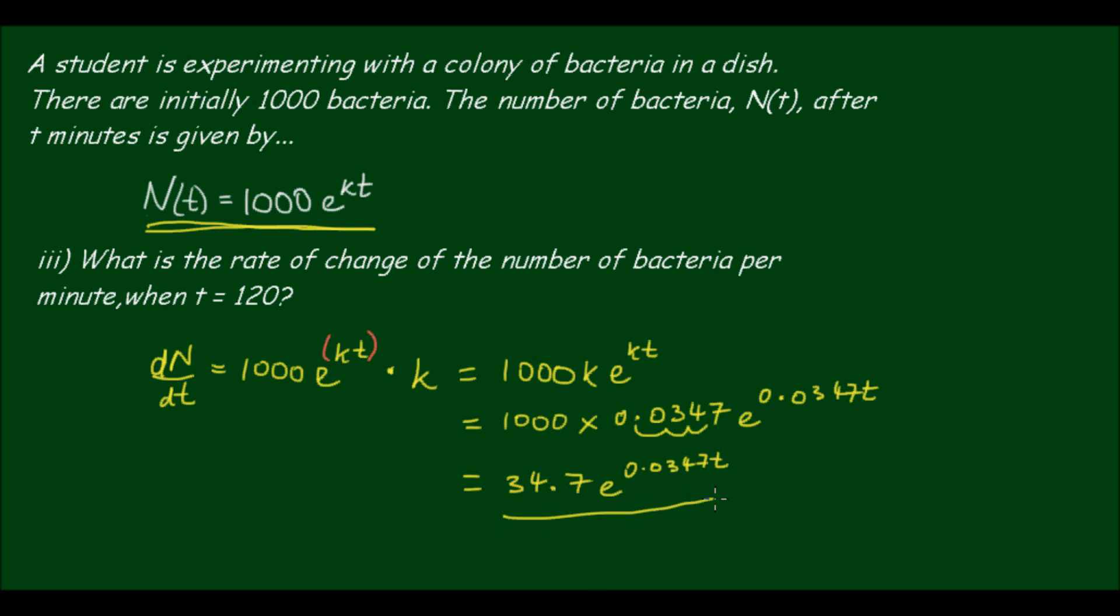So this is the rate of change of bacteria at any point in time. And we want to calculate for when t is equal to 120. So dn dt of 120 is equal to 34.7 e to the 0.0347 times 120, which gives us 2232 bacteria per minute. So at t is equal to 120, the number of bacteria is growing at a rate of 2232 bacteria per minute.